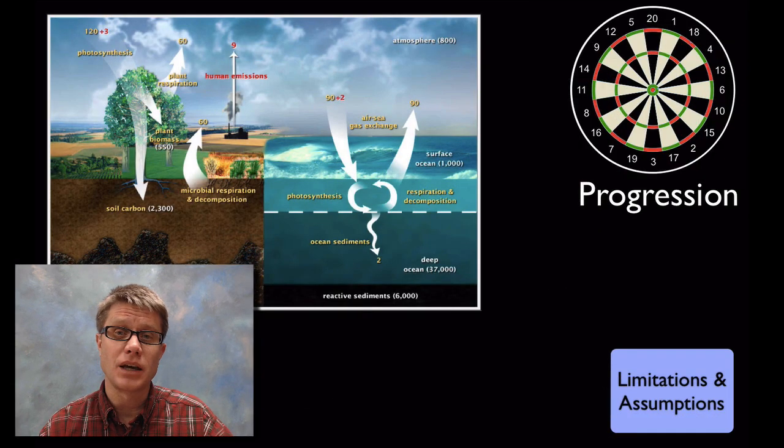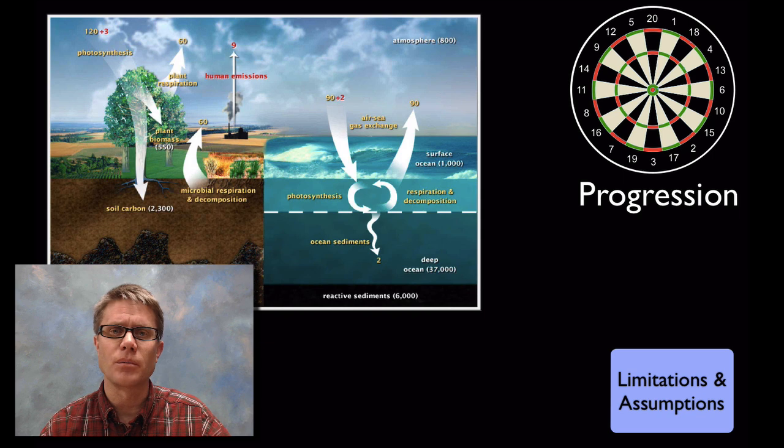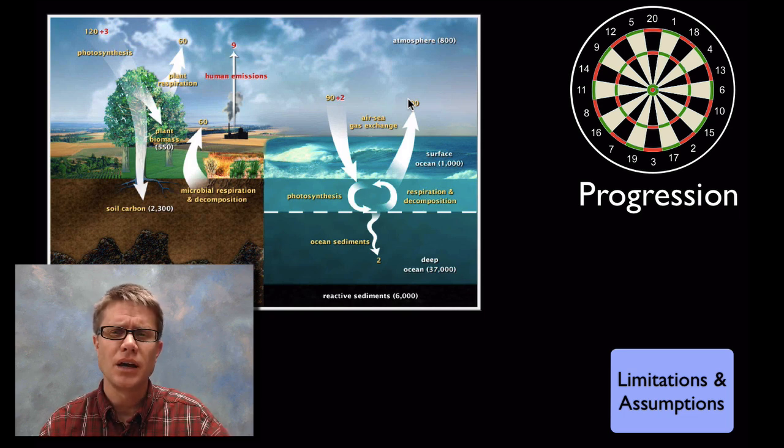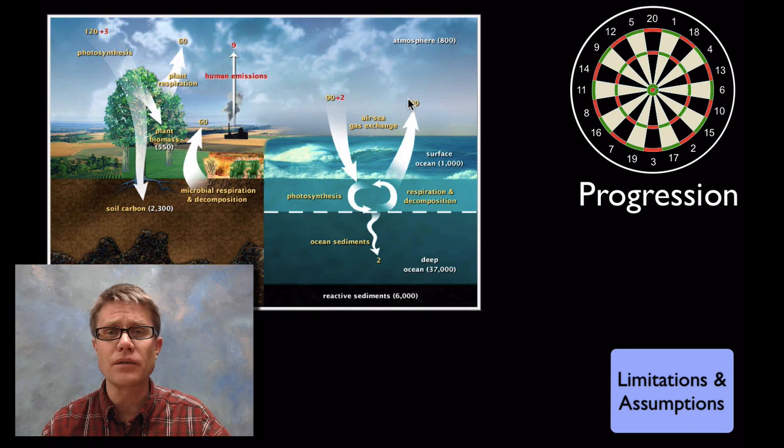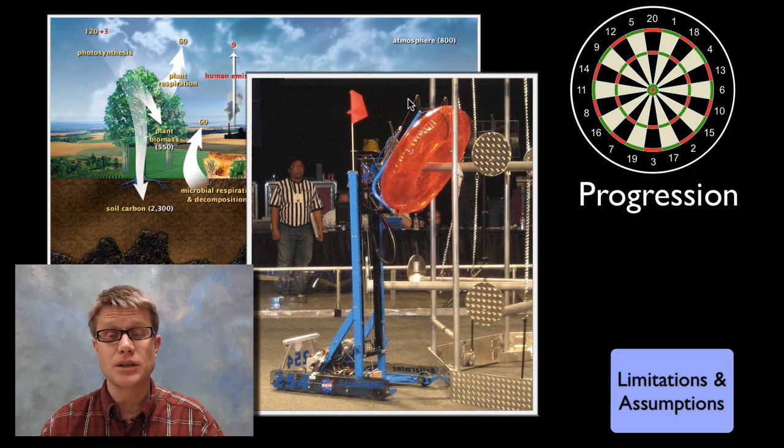So as we build these models and they get better and better and better we want our students looking at them. And we're looking for limitations or assumptions that we're making. In other words this right here is the carbon cycle. And it's trying to quantify mathematically the amount of carbon at different levels. But it's just a model. It's a model for a system. It's not the system itself. And so we want our students using argumentation to talk about these systems as well, and where there is good evidence and where there is bad evidence as well.